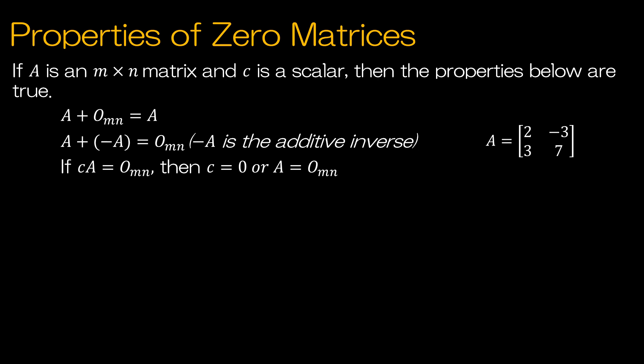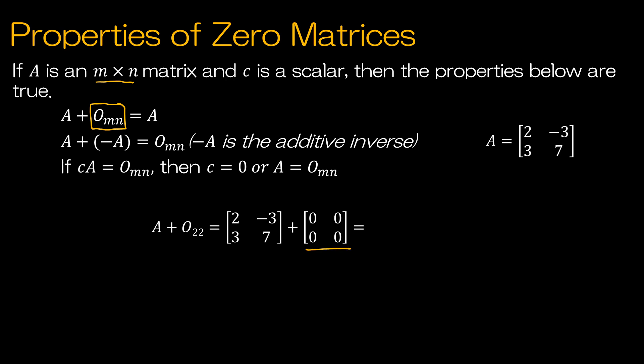Now let's talk about properties of zero matrices. A zero matrix is just a matrix full of zeros. So we have A as an M by N matrix. When it says zero with a subscript of MN, that just means it's M rows and N columns. Here A is a 2 by 2 matrix, so the zero matrix is the 2 by 2 matrix of all zeros. The first property says if you add the zero matrix to a matrix, you end up where you started — that's called the additive identity.